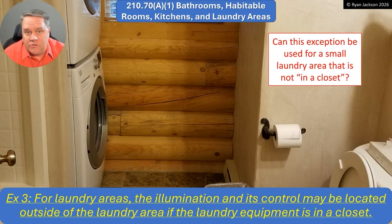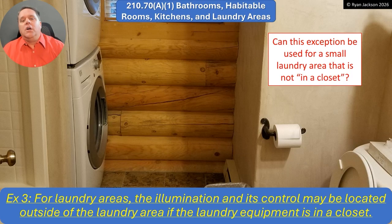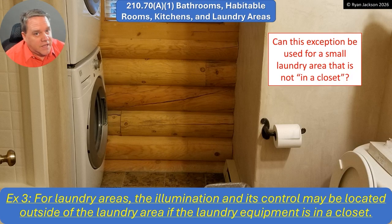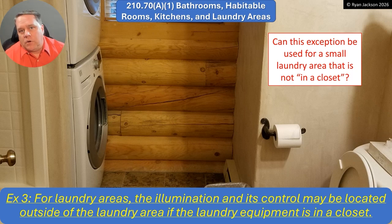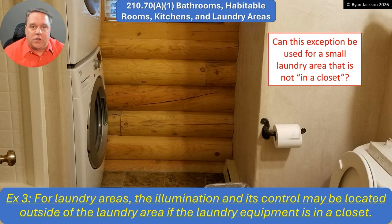We added a new exception here, which I think is a good thing. For laundry areas, the illumination and its control may be located outside of the laundry area if the laundry equipment is in a closet. This used to say bathrooms, habitable rooms, and kitchens. Then in the 2023 code, we added laundry areas. The laundry area needs illumination — it needs a lighting outlet. But what if your laundry equipment is a stackable unit in a little closet off the hallway? Do you really need a lighting outlet in that closet? And what would it even do? It's probably going to be above the dryer — you turn it on and it doesn't even illuminate anything. It would just add heat and maybe even be a fire hazard.